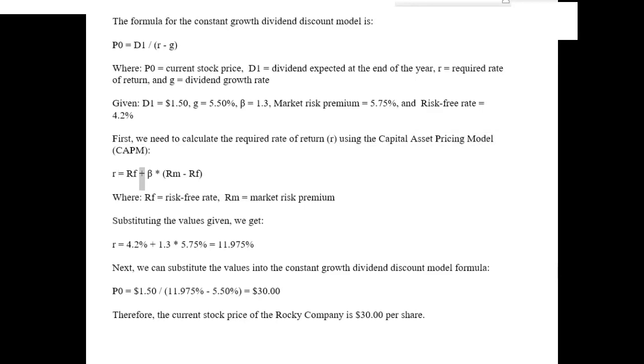R equals RF plus beta asterisk (RM minus RF). Where RF equals risk-free rate, RM equals market risk premium.